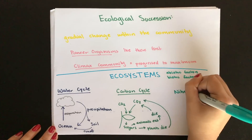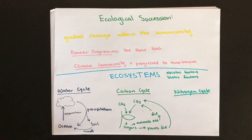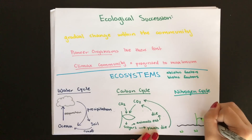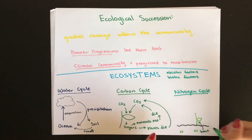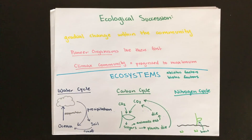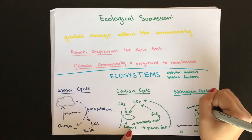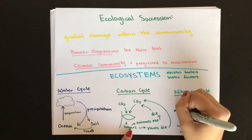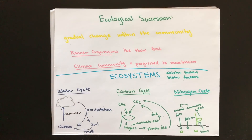Nitrogen is necessary to produce protein because it is found in all amino acids. Nitrogen is mostly fixed by bacteria, as discussed in the plant video. Plants are then consumed by animals, and as the plants and animals die, the nitrogen is recycled back into the soil and the cycle continues.